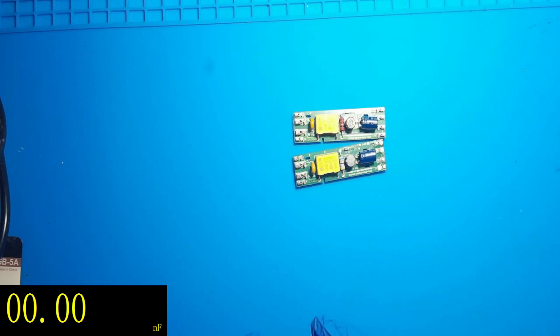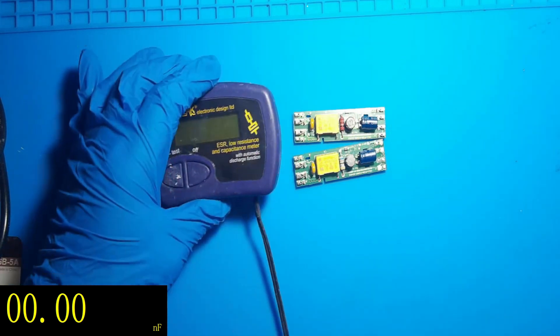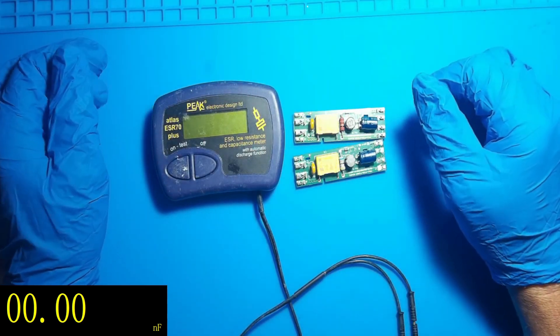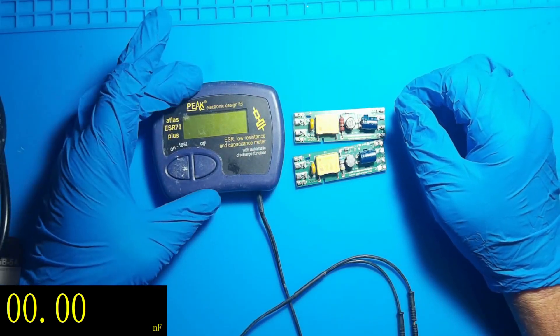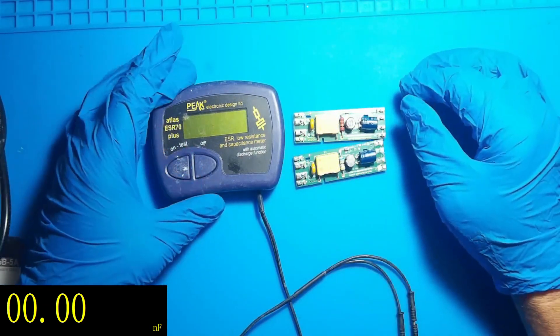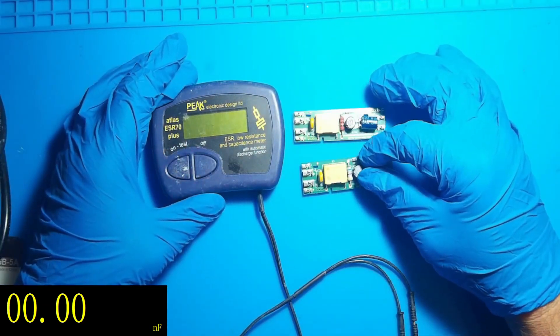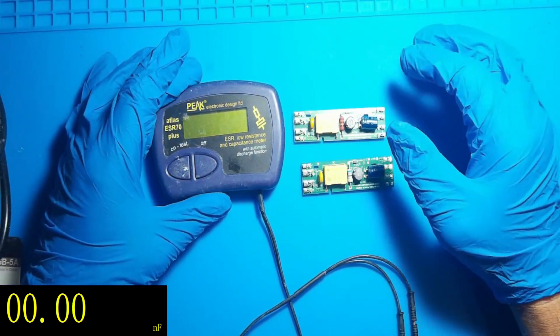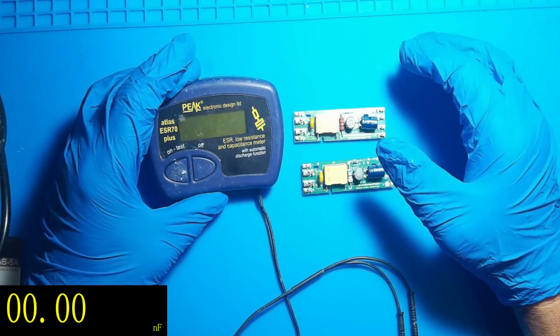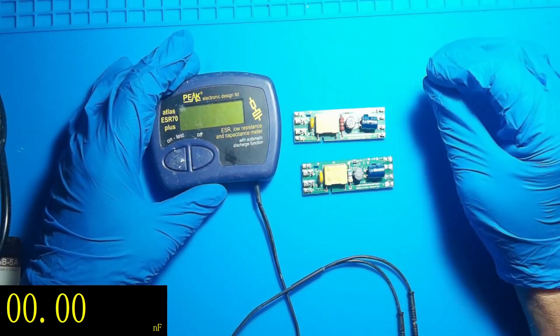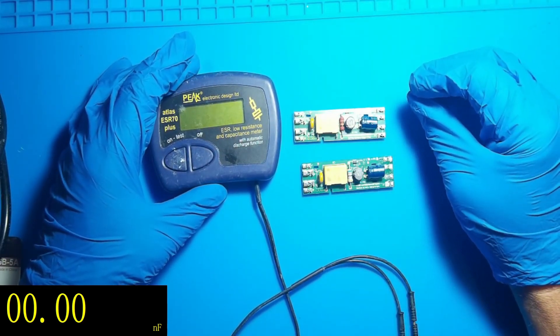This is why I do use an ESR meter. Here's the one I use, it's a Peak Atlas ESR 70 Plus. Now this will measure it in a DC mode to give us the capacitance, and then it will oscillate it, I think it's probably around either 1 kilohertz or 10 kilohertz to give us the ESR reading.